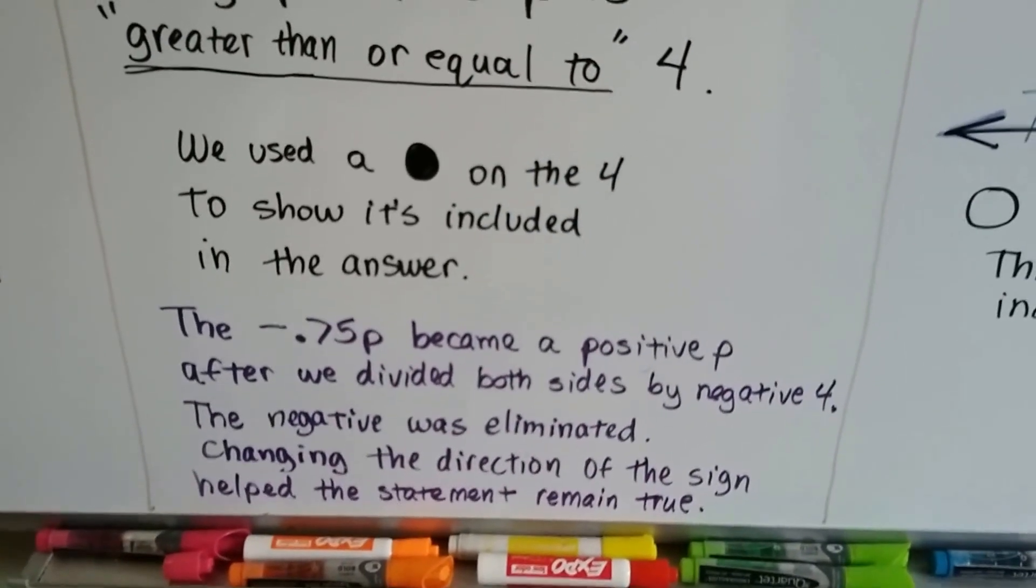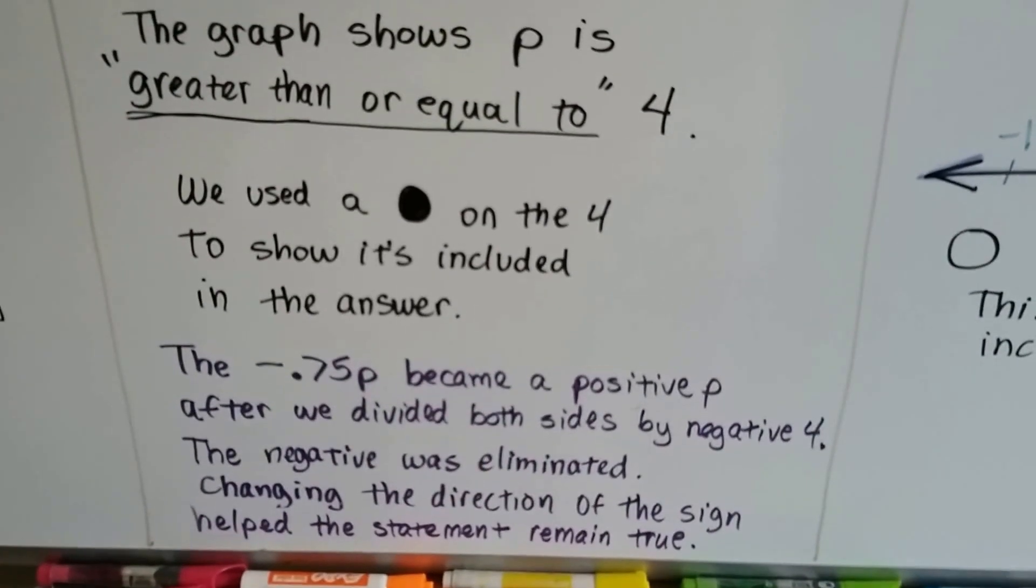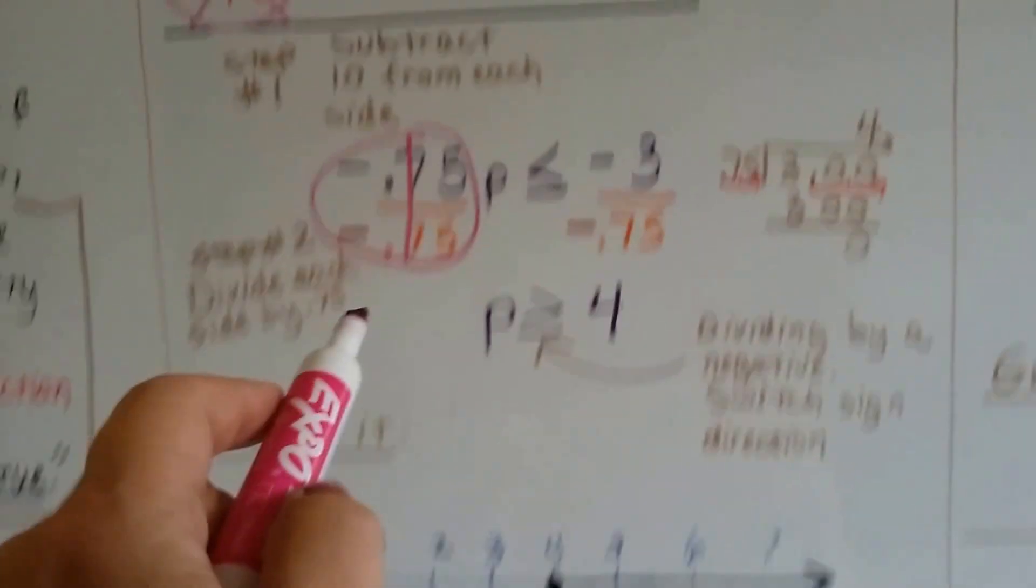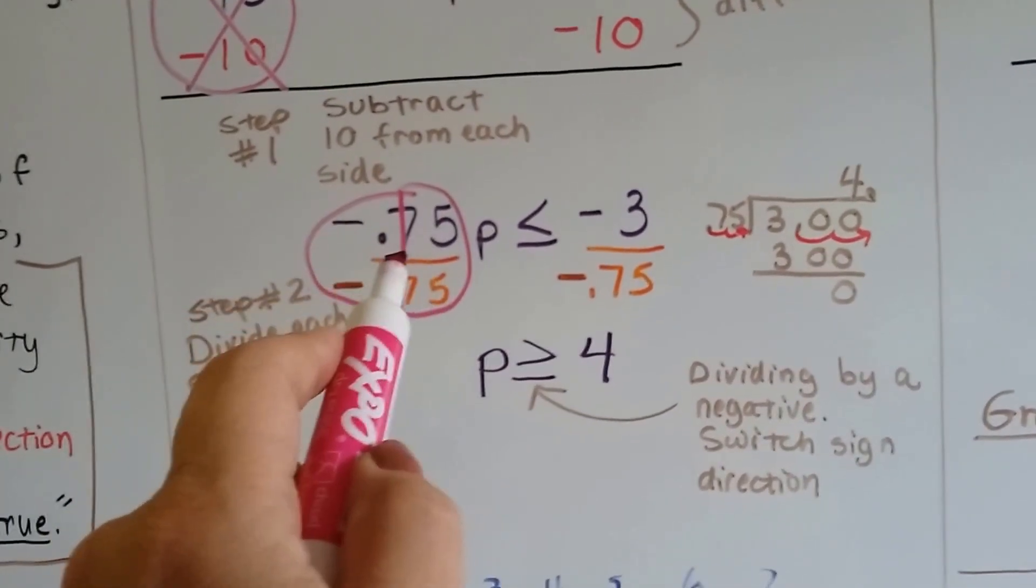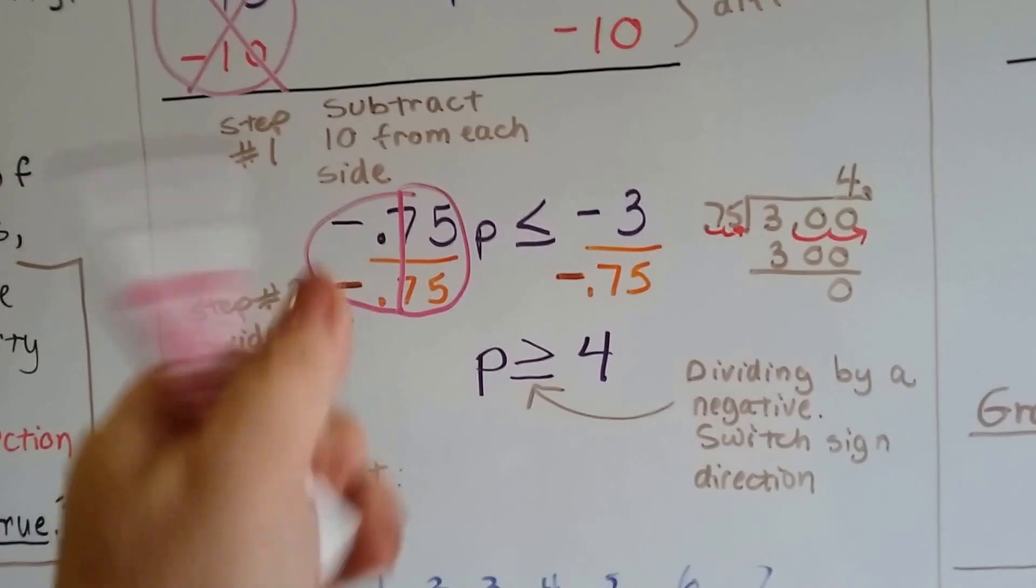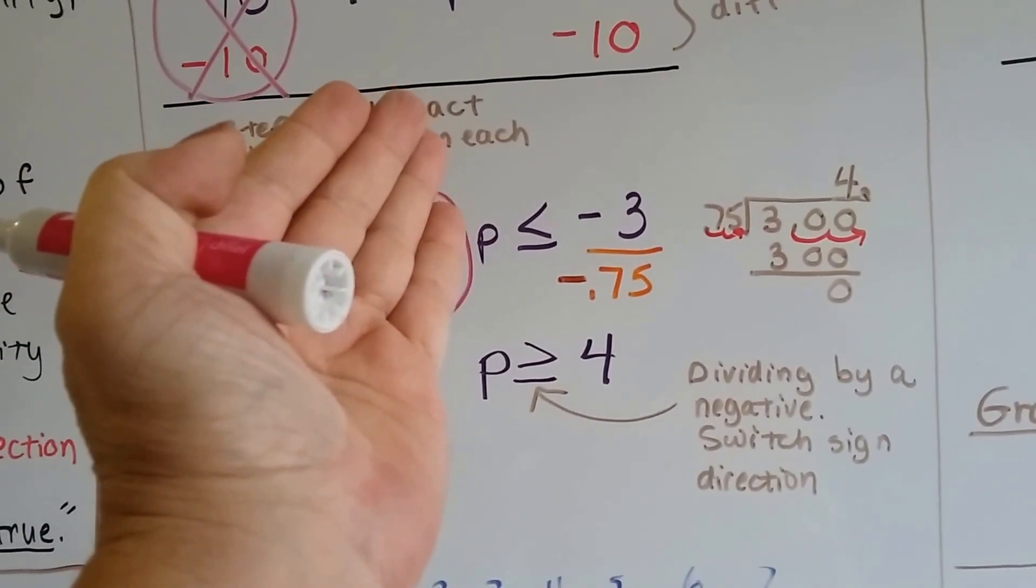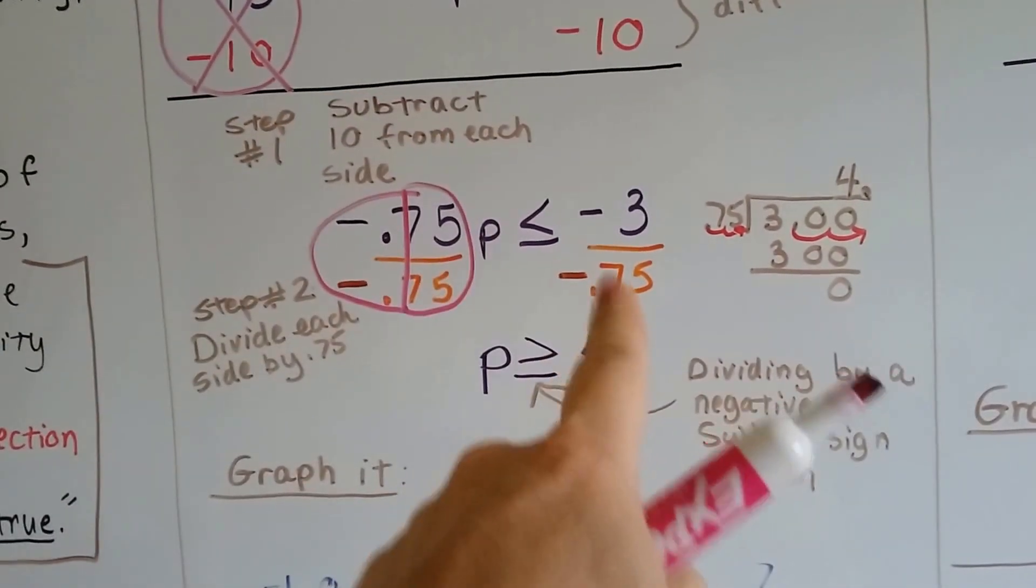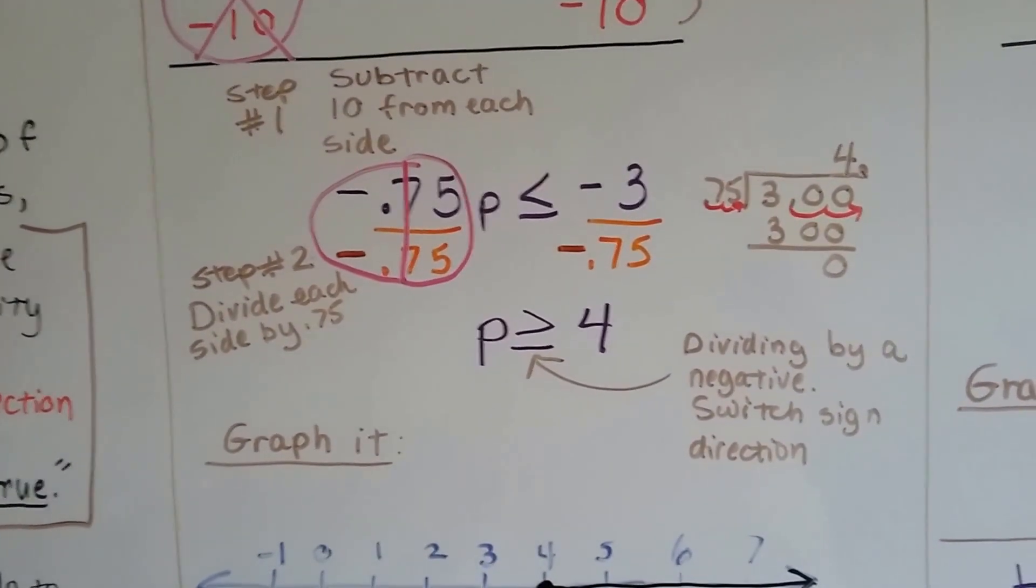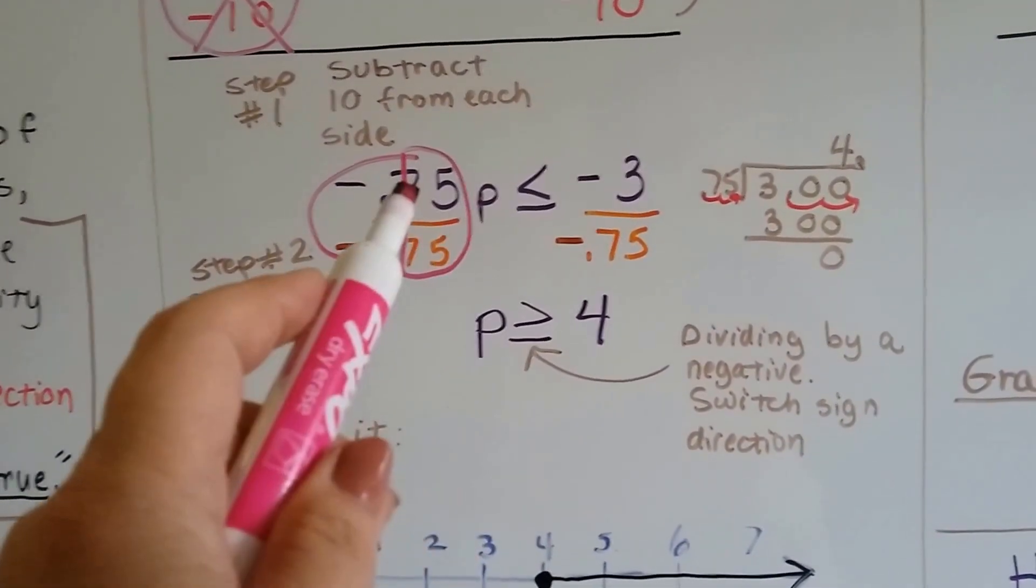The negative 0.75p became a positive p after we divided both sides by the negative 4. We had a negative 0.75p, and once we divided it by that negative 0.75, it got rid of the negative. Now it's just a p, a positive p. And the negative is gone from this side, too.